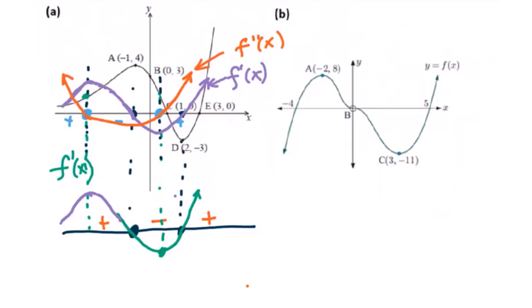Now let's go to part b. First of all, get the maximum and minimum — this will be the x-intercept for the first derivative. This is a stationary inflection point, so still I will draw this. Then you figure out the sign diagram: going up is positive, then negative, negative, here is positive. Then get the inflection point — that will be your maximum or minimum of the first derivative.